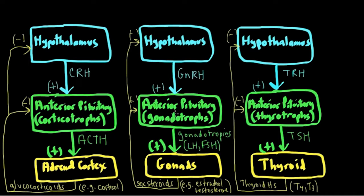The output of these corticotrophs, gonadotrophs, and thyrotrophs are the tropin hormones — ACTH, gonadotropins, and TSH. The receptors for those hormones are on the major endocrine organs: the adrenal cortex, the gonads, and the thyroid. These are all marked with a plus because when ACTH, gonadotropins, and TSH go up, the output from the endocrine glands goes up as well, and vice versa. What makes these negative feedback loops is that the end products of these glands come back and inhibit hypothalamic and anterior pituitary output.